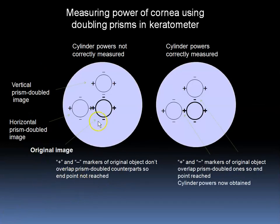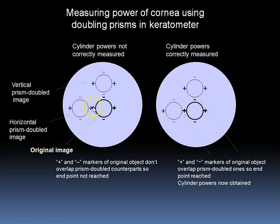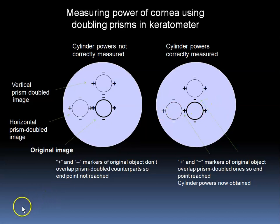This calculation is then done in two different axes to calculate the power in different meridians. The power of the doubling prisms is adjusted so that the minus sign here overlaps the minus sign there, and the plus sign here overlaps the plus sign there. In this position, we are now correctly measuring the power in one axis and in the other axis. The whole device can be rotated so that these axes can be in line with the axes of an astigmatic patient eye. This is a basic keratometer setup.